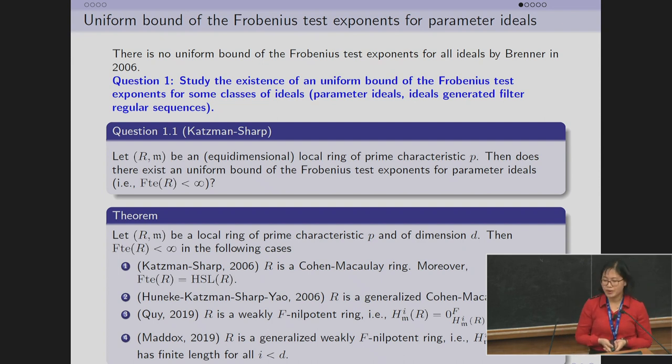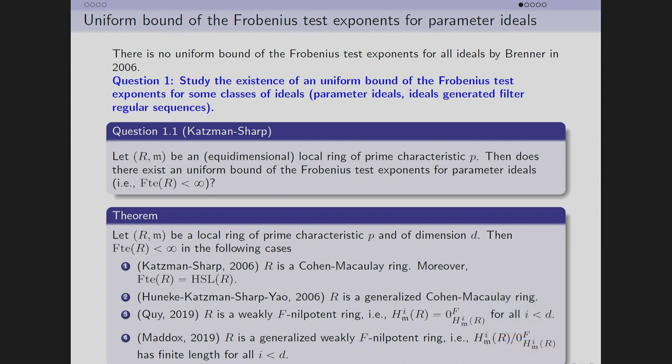Question 1.1 is raised by Katzman-Sharp: Does there exist a uniform bound of the Frobenius test exponent for parameter ideals, such that FTE(R) is finite? Some cases have positive answers for Question 1.1. The first case is Cohen-Macaulay rings. Moreover, in Cohen-Macaulay rings, the Frobenius test exponent for parameter ideals equals the Hassan-Spicer-Lyubeznik number of the ring, by Katzman-Sharp in 2006.